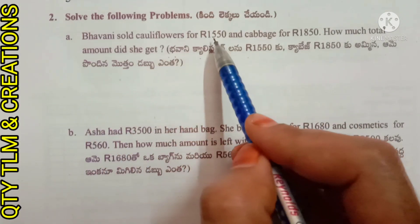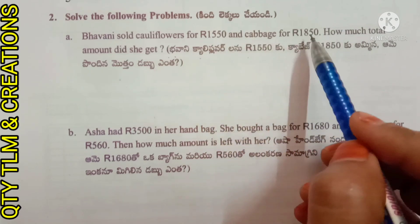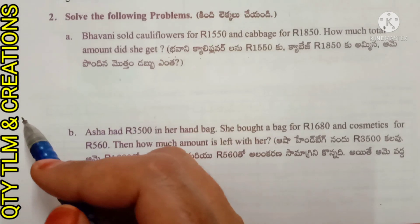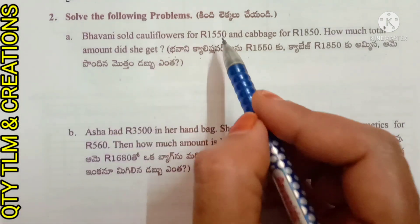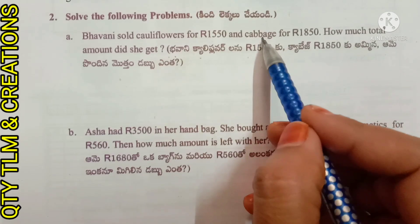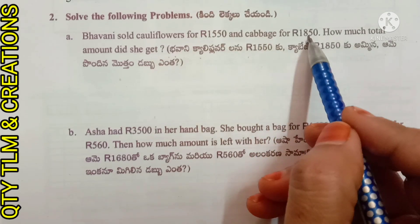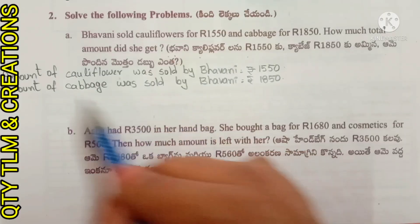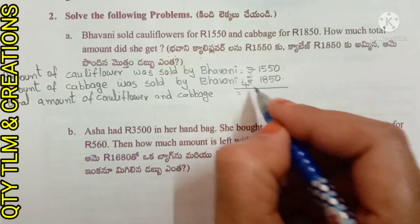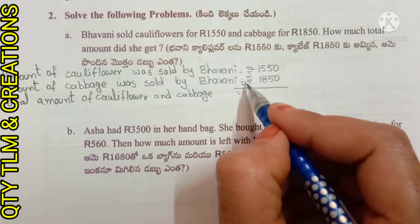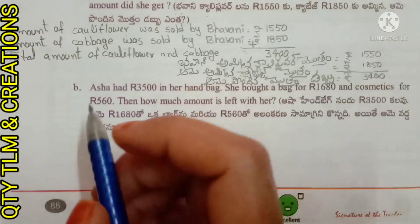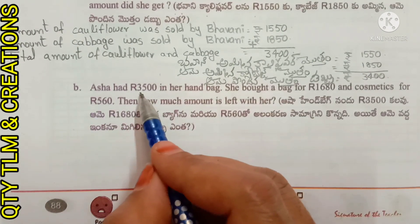Bhavani sold cauliflower for 1550 rupees and cabbage for 1850 rupees. How much total amount did she get? Amount from cauliflower equals 1550 rupees and amount from cabbage equals 1850 rupees. Total amount of cauliflower and cabbage: we add 1550 and 1850, we get 3400 rupees.